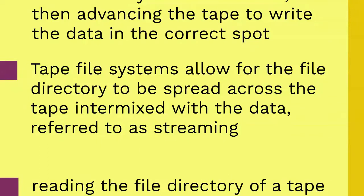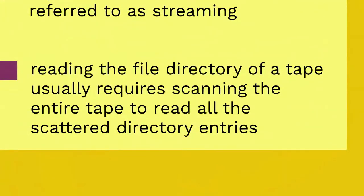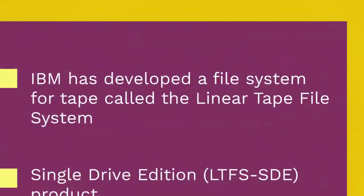Tape file systems instead typically allow the file directory to be spread across the tape intermixed with the data, referred to as streaming, so that time-consuming and repeated tape motions are not required to write new data. However, a side effect of this design is that reading the file directory of a tape usually requires scanning the entire tape to read all the scattered directory entries. Most data archiving software that works with tape storage will store a local copy of the tape catalog on the disk file system, so that adding files to a tape can be done quickly without having to re-scan the tape media.